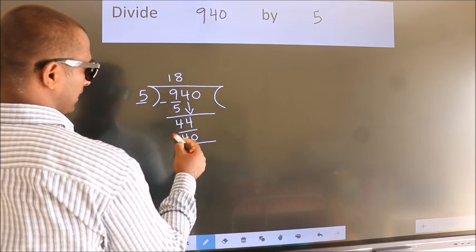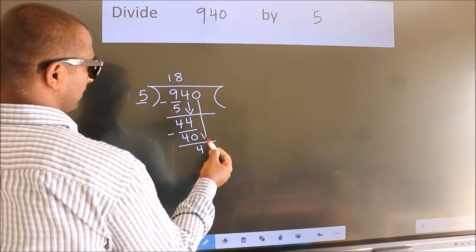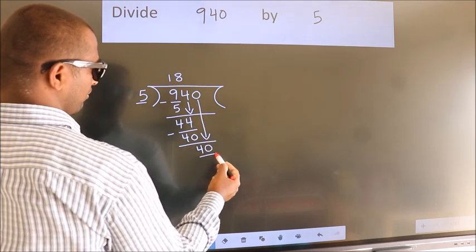Now we subtract. We get 4. After this, bring down the beside number. So 0 down. So 40.